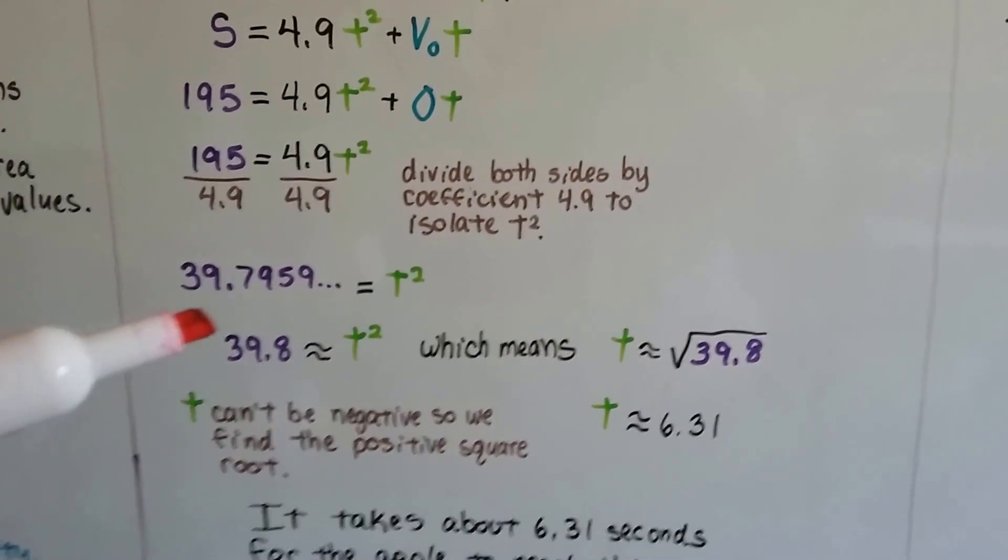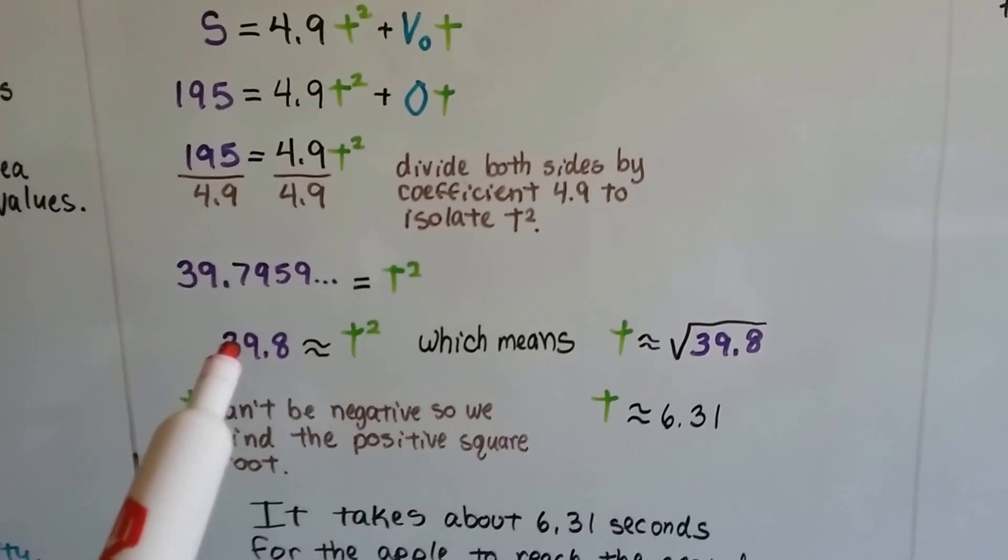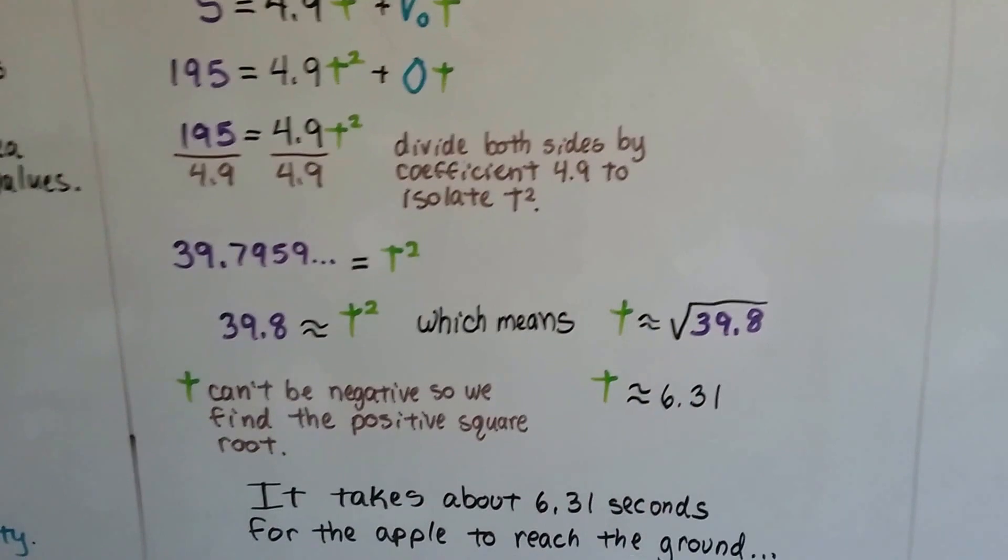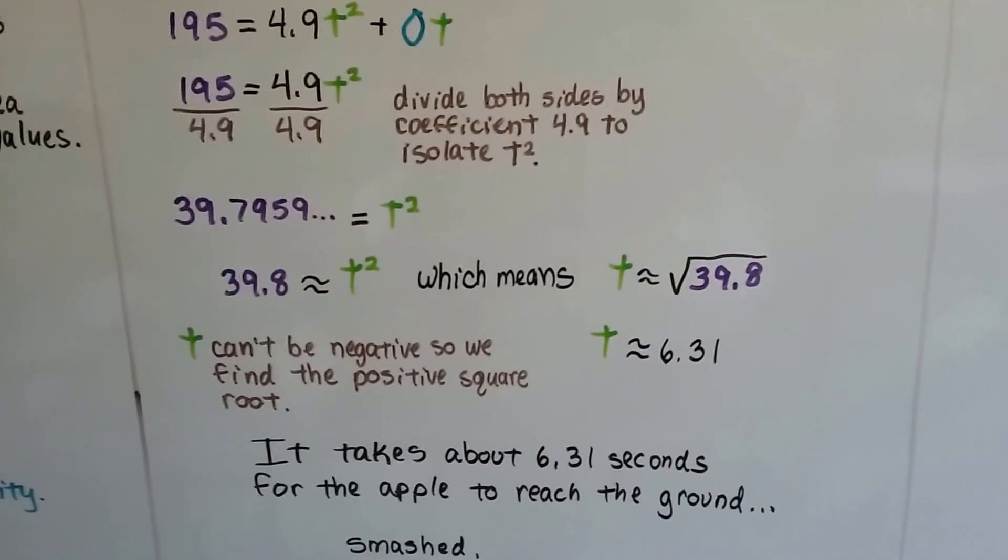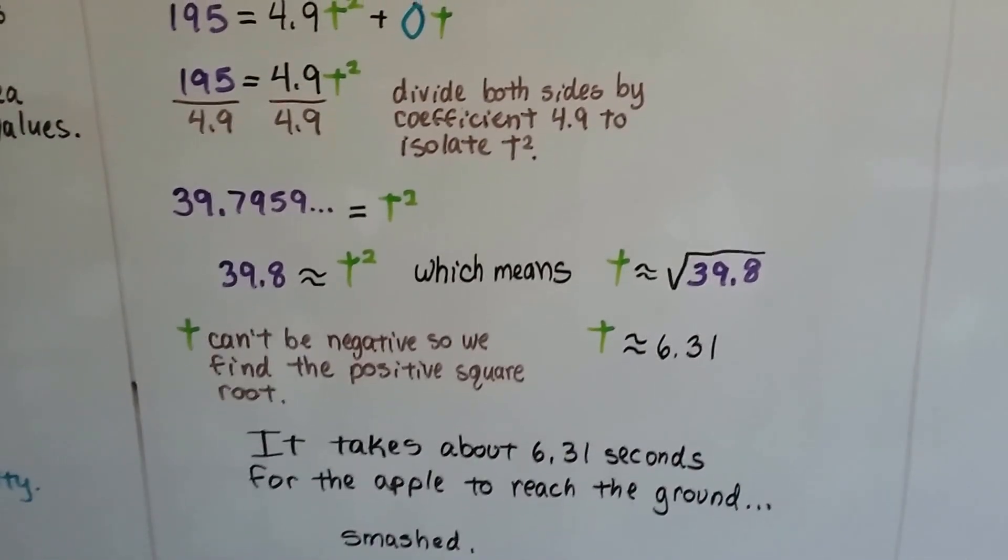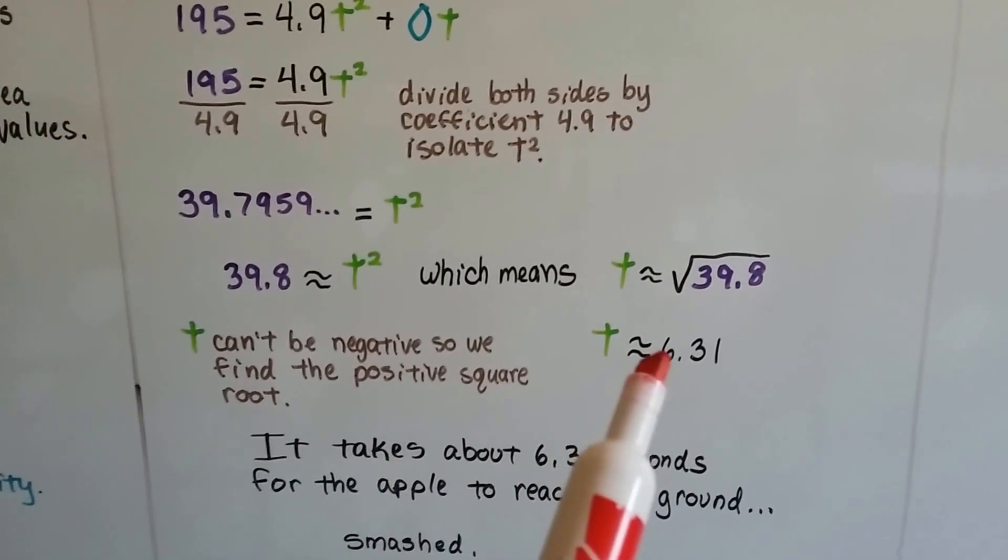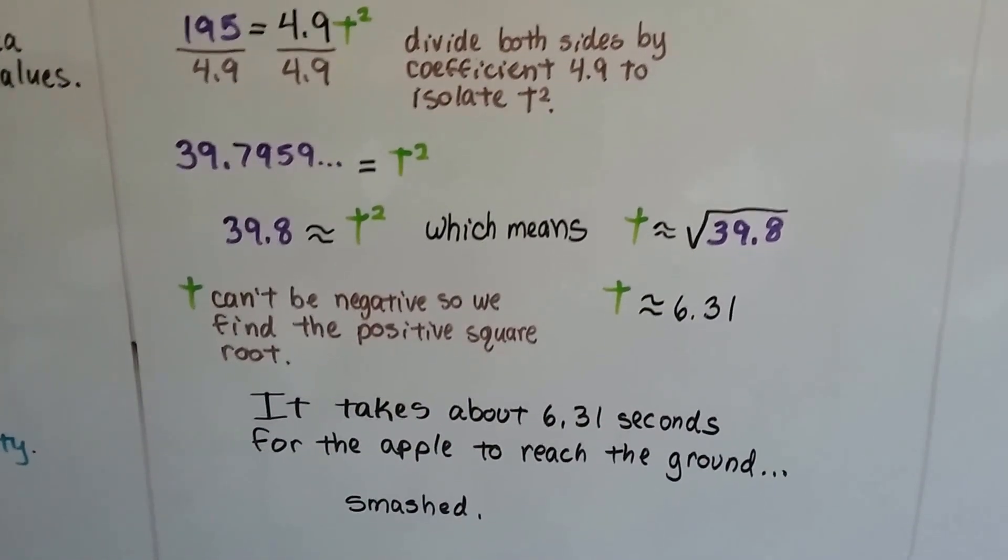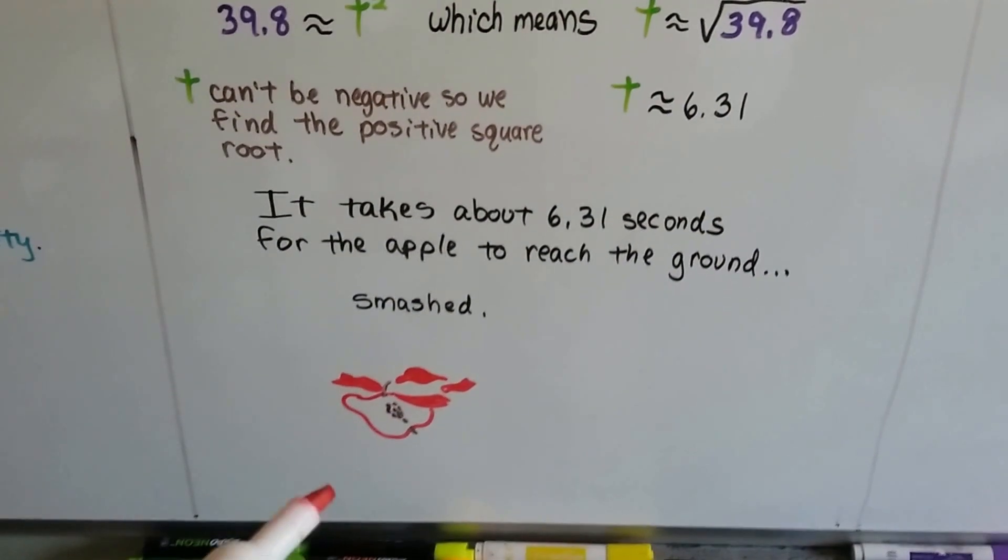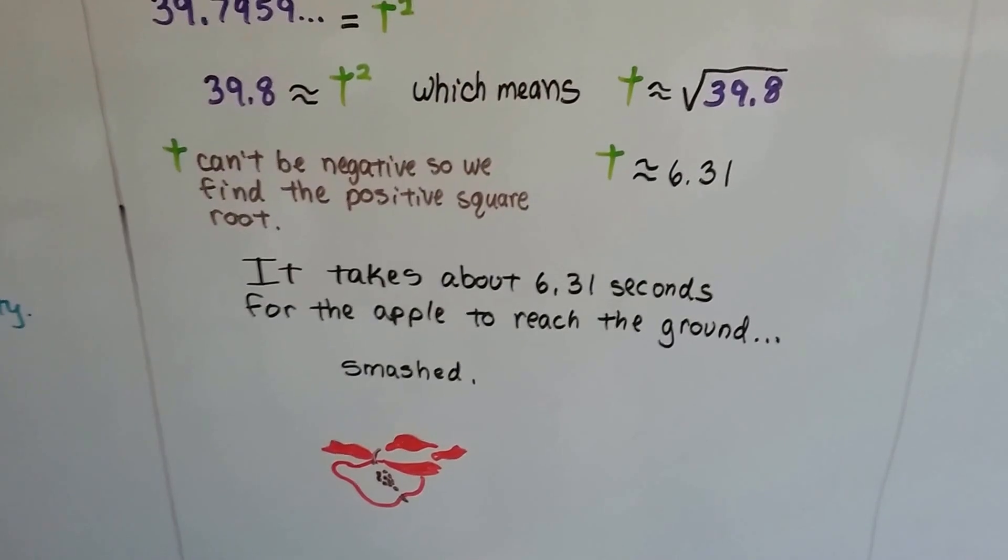We have 39.8 is approximately t squared. If we take off that 2 exponent and put a radical sign around the 39.8, we'll figure out what t is. We find the square root of 39.8 with our calculator and it can't be a negative. We can't have a negative amount for dropping this apple. So we get a positive 6.31. So it takes about 6.31 seconds for the apple to reach the ground. Smashed. That's pretty fast, 6.31 seconds for an apple to fall from the top of that arch.